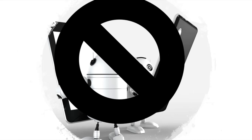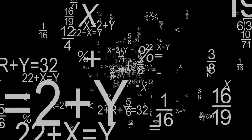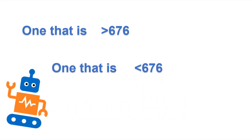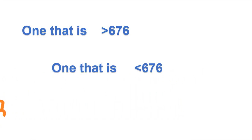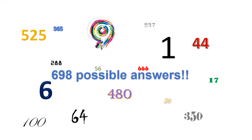No phone. We're going to break this down into simpler steps. How about a simpler problem? Pick two numbers: one that is greater than 676 and one that is less than 676. Let's call those numbers x and y. Well, that doesn't sound too difficult. How about x equals 1 and y equals 700? Surely that satisfies the criteria. Yes, but that leaves 698 possible answers.